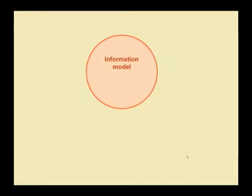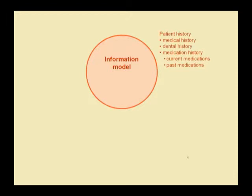An information model is a way of hierarchically organizing information into ever more granular categories. For instance, with respect to a dental record, one of the top-level categories might be comprehensive patient history. That may include patient medical history, dental history, and medication history.